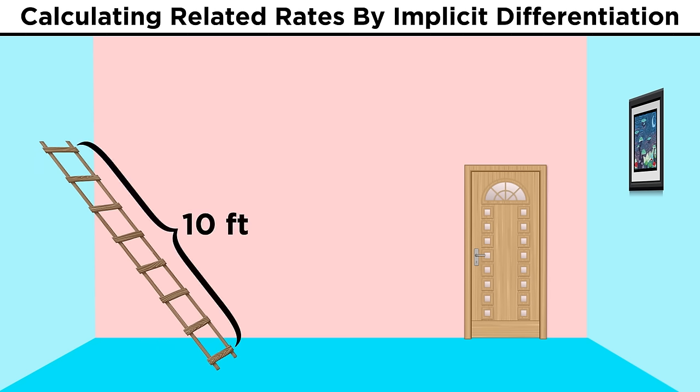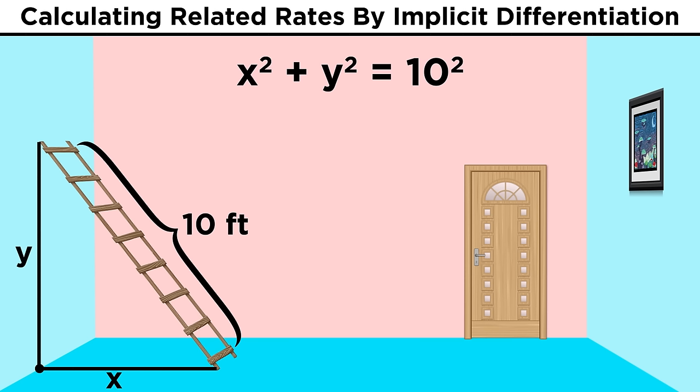Looking at the diagram, we have a ladder with a constant length of ten, and then these values are the variables x and y, as they both change over time. So that makes a right triangle with a known hypotenuse, and the two legs unknown. We can relate the variables by the Pythagorean theorem. That would be x squared plus y squared equals ten squared, or a hundred.